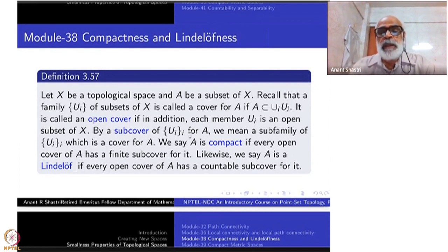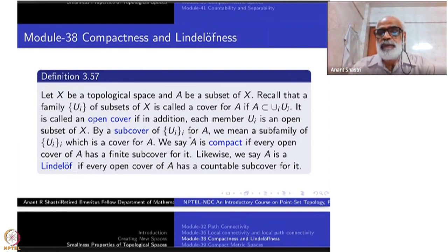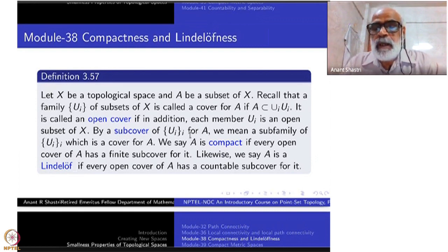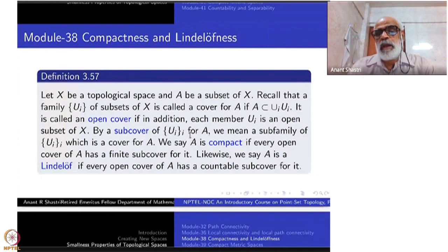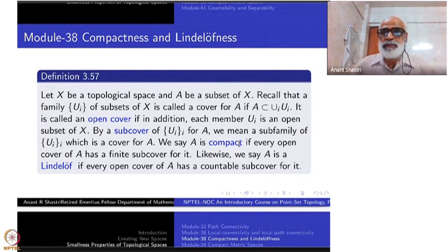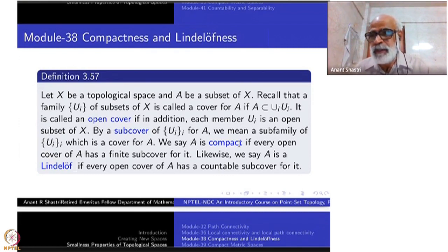Once we have these definitions, a subset A is called compact if every open cover of A has a finite sub cover for it. Likewise, we say A is Lindelof if every open cover of A has a countable sub cover for it. I have deliberately not put 'compact space' and 'compact set' as separate things — whatever you want to call it, if you think of this as a subspace you are welcome, if you think of it as a set you are welcome. Compact set or compact subspace. What I have defined is compactness here, and similarly Lindelofness.